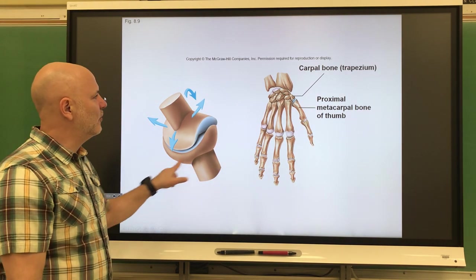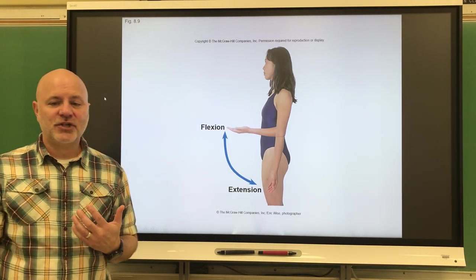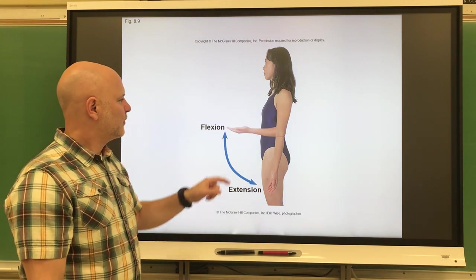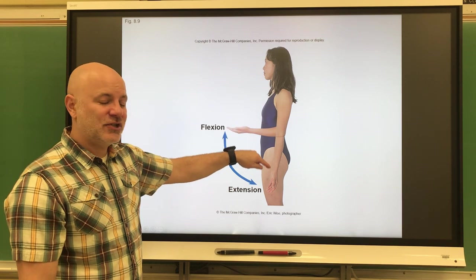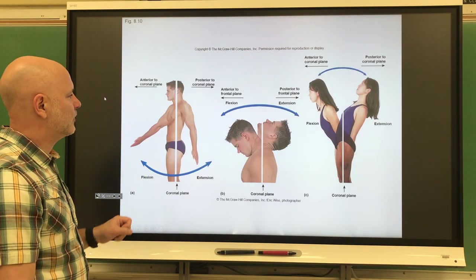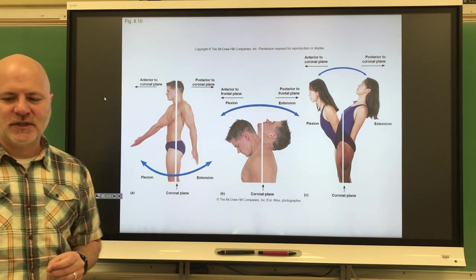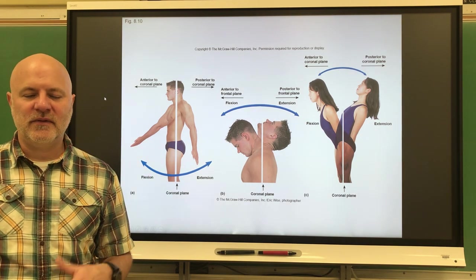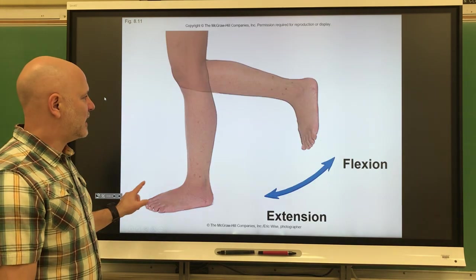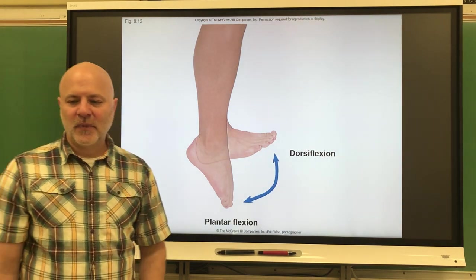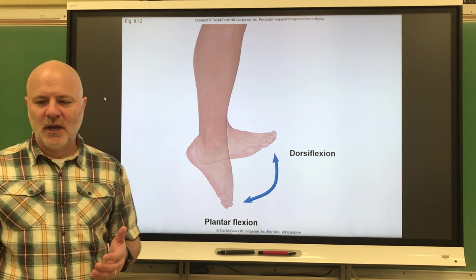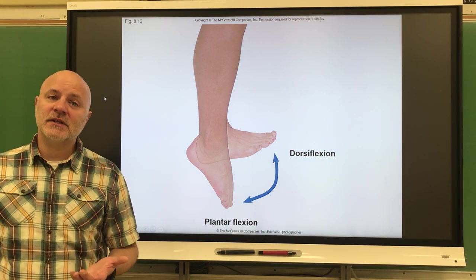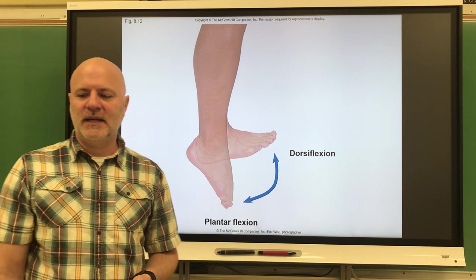Let's take a look at types of synovial movements. Flexion is a decreasing joint angle — bringing the arm up. Extension is an increase in joint angle — bringing it back down. Hyperextension is the excessive extension of the parts of a joint, typically associated with damage. For the foot: dorsiflexion is flexion of the foot upwards towards the body — like taking your foot off the gas. Plantar flexion is flexion of the foot downwards away from the body — like pressing the gas pedal.